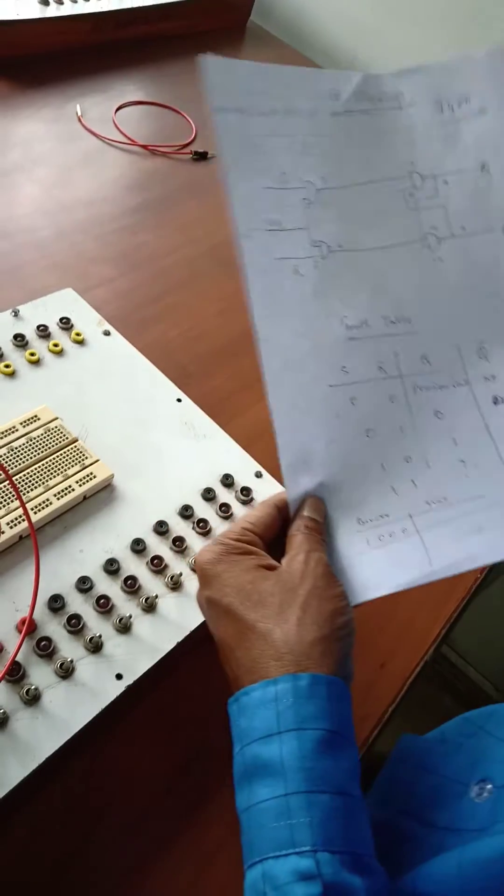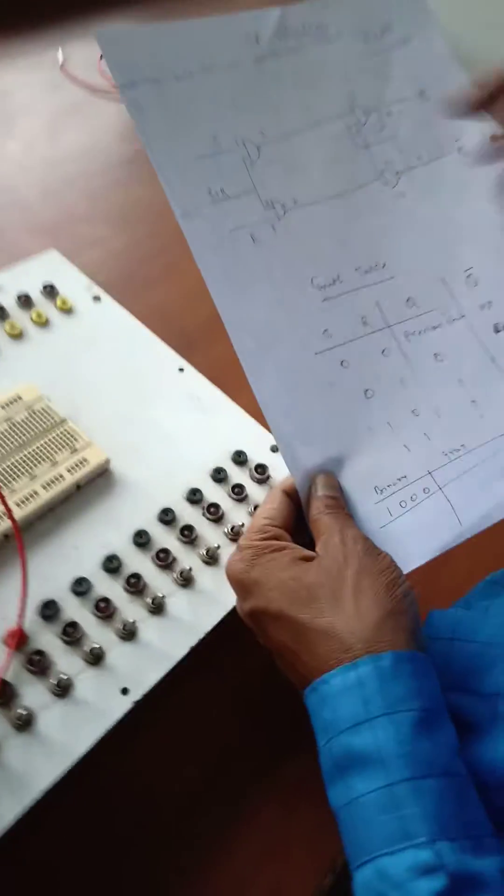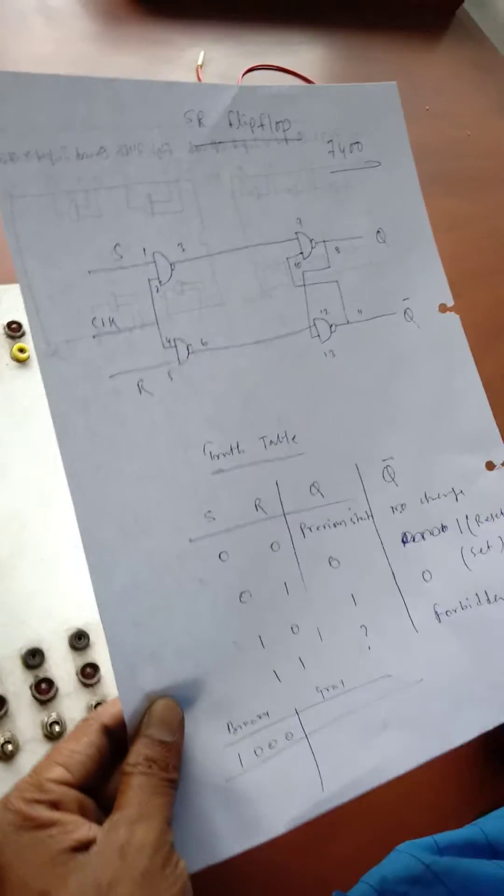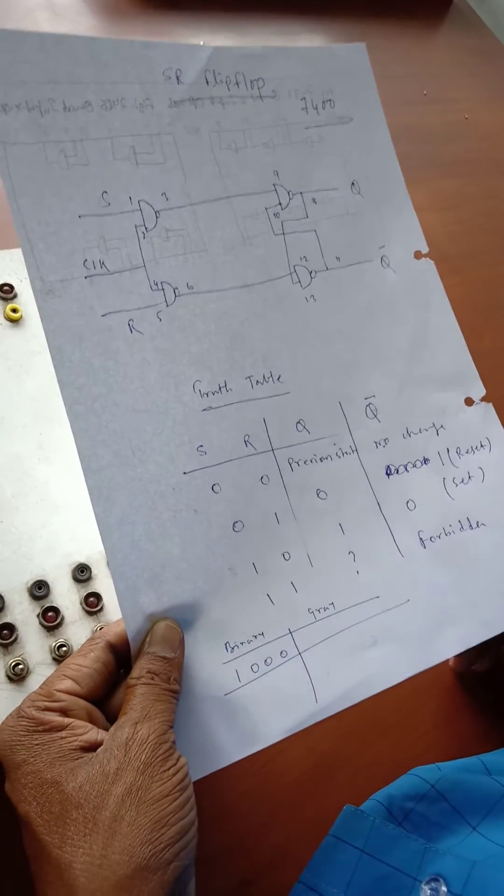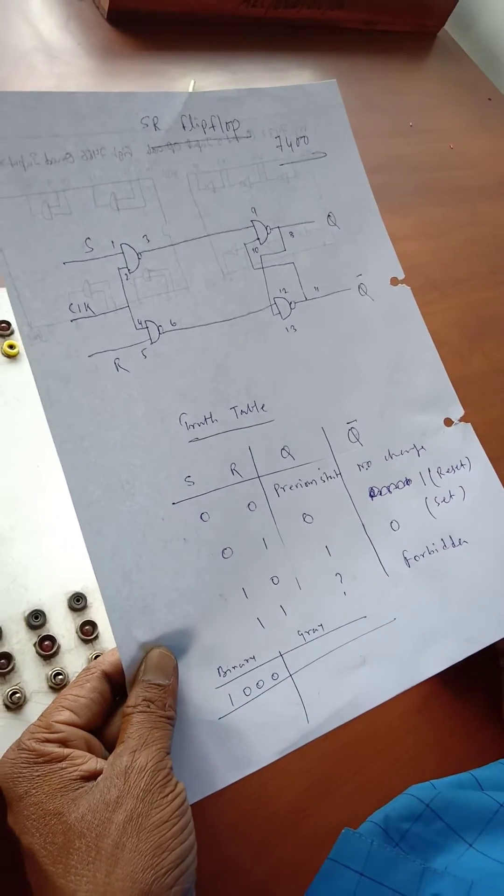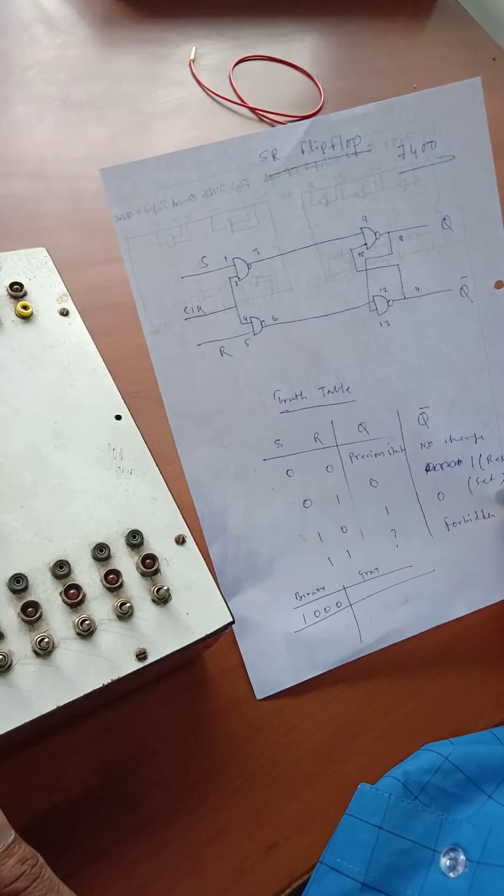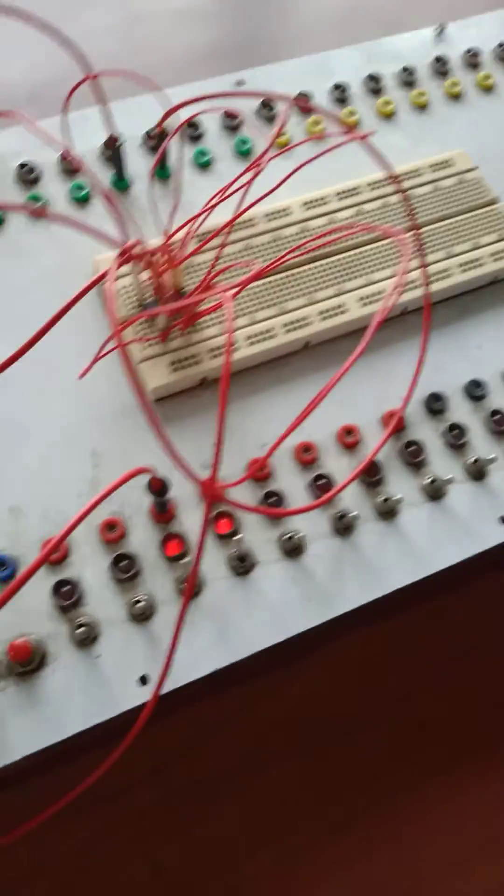Basically you have to connect all the circuits as per your circuit diagram and as per your pin number, and finally you have to check your truth table. So every experiment you have to check through your truth table. As per your truth table you will get the output, and as per your circuit diagram you have to make the circuit and get the output.